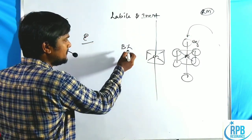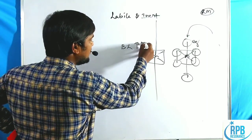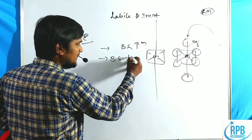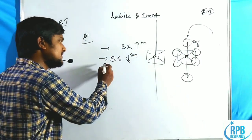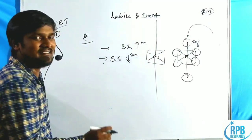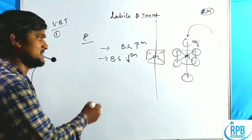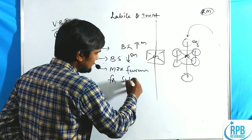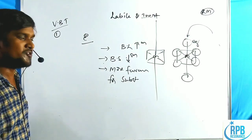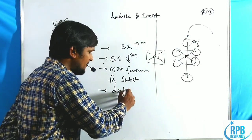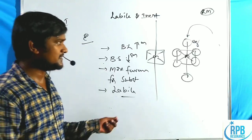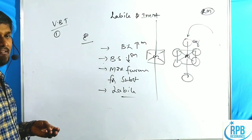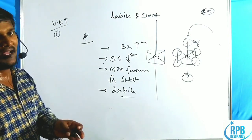Whenever an electron enters into the Eg orbital, bond length increases. So if bond length increases, metal-to-ligand bond strength decreases. If bond strength of the metal and ligand decreases, that is prone for substitution reaction — more favorable for substitution reaction. So if it is more favorable for substitution reaction, then it is called labile complexes. This happens in the case of electron entering into the Eg orbital.